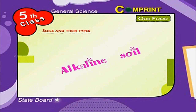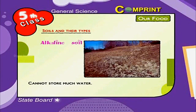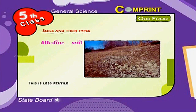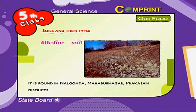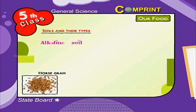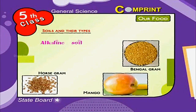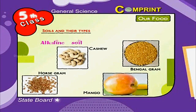Alkaline Soil cannot store much water and is less fertile. It is found in Nalgonda, Mahabubnagar and Prakasham districts. Crops like Horse Gram, Bengal Gram, Mango and Cashew are grown here.